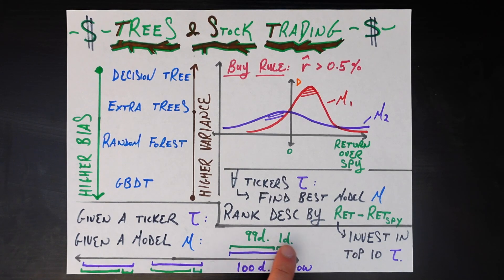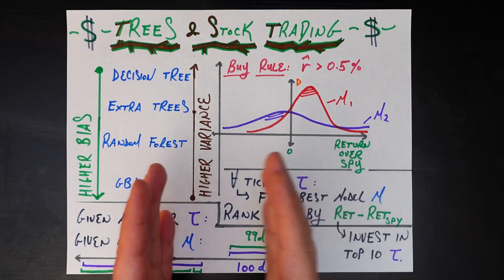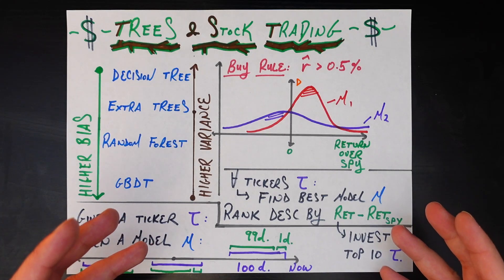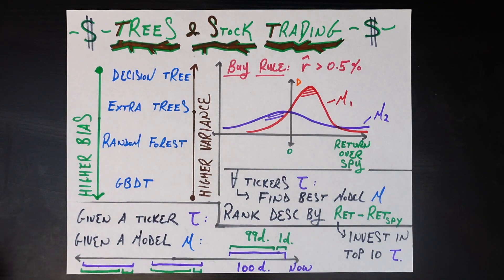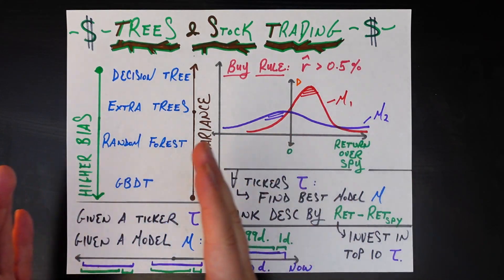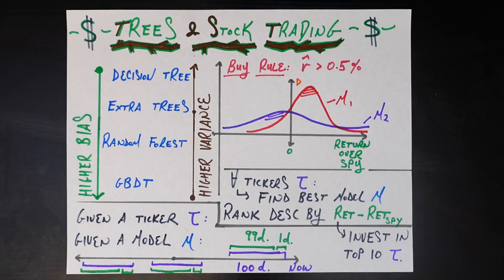That's the decision for one hundred-day window. Next we slide the purple window one day backward in time, take the first ninety-nine days there, train another decision tree on that different set of ninety-nine days, and use it to predict the next day. We keep rolling that window back one day at a time for 365 days in the past.